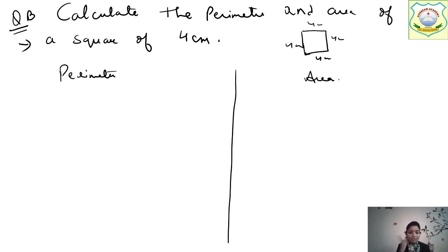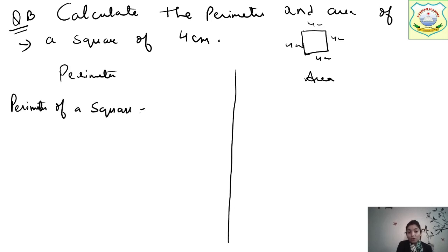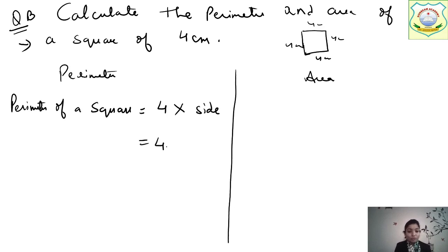So let's start. Formula: perimeter of a square = 4 × side. I am doing this for revision as you have a test on the 17th. So perimeter = 4 × 4 = 16 centimetres.